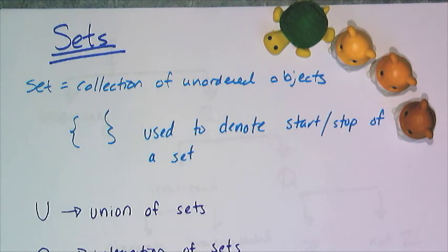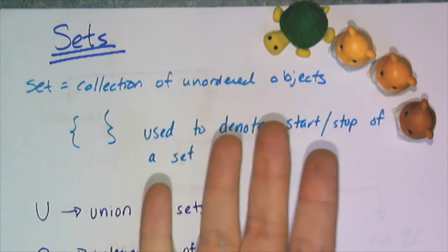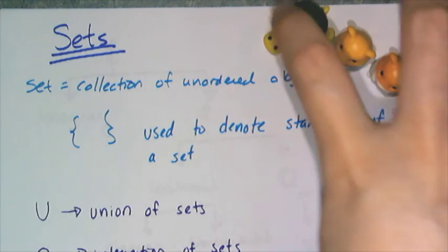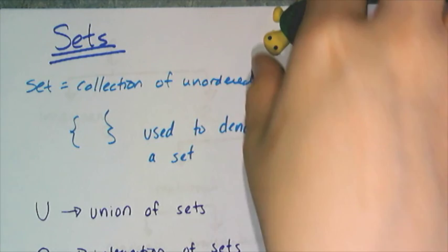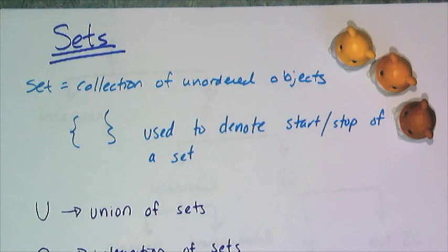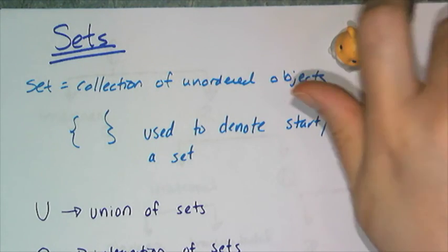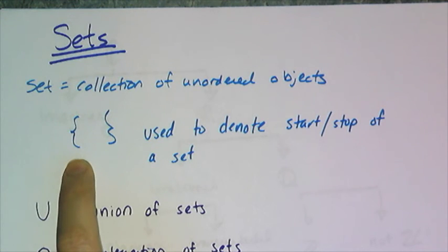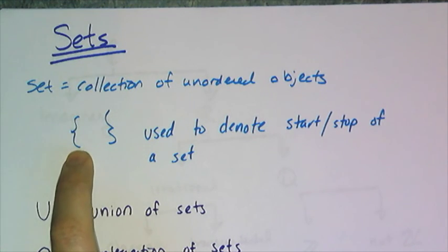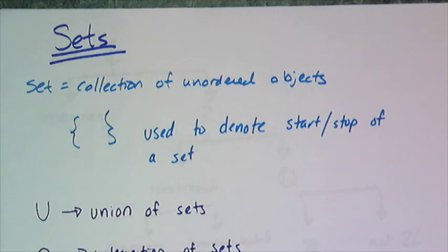Let's start off with the definition of a set, and it is just a collection of unordered objects. For example, here I have a collection of erasers, so I have a set of erasers here. And if I have a subset, that means a set within the set, so I can say one of the subsets is just the hamster erasers. And if I wanted to denote a set on paper, meaning writing it down, I have to use the braces, the curly braces, to start and show the end of a set.